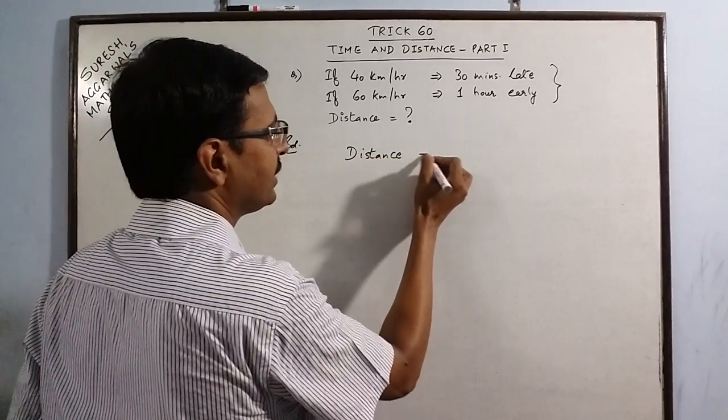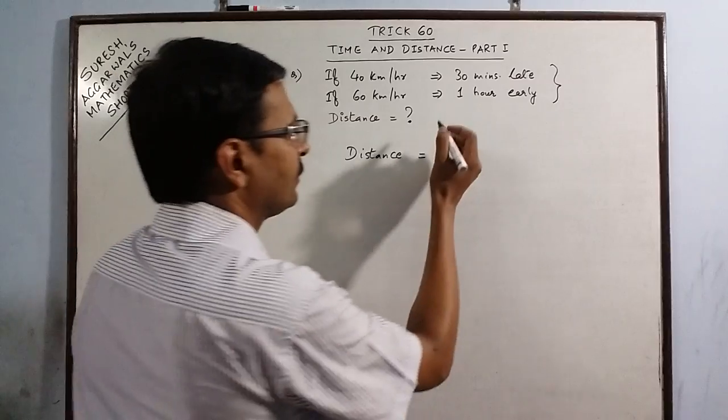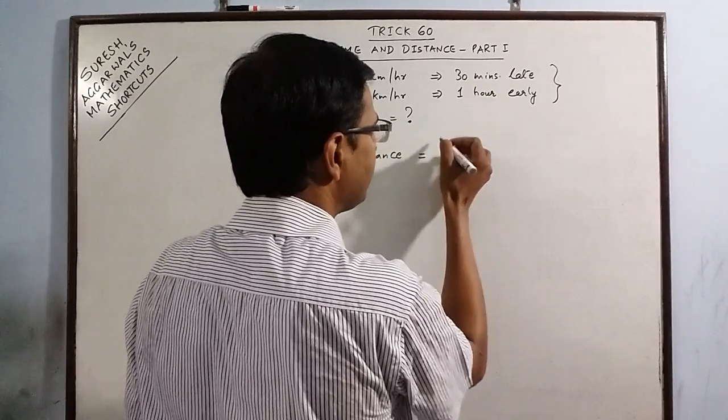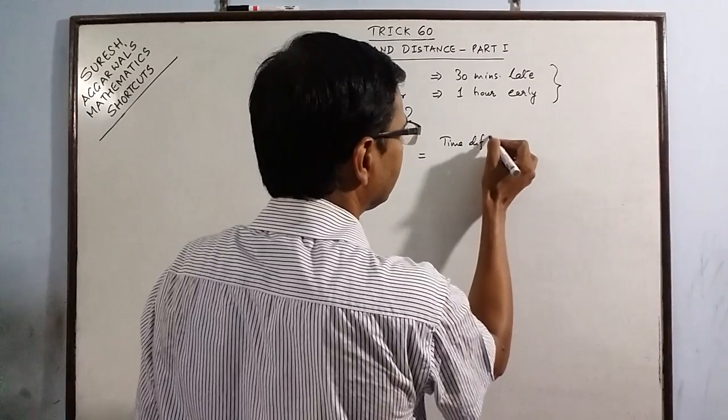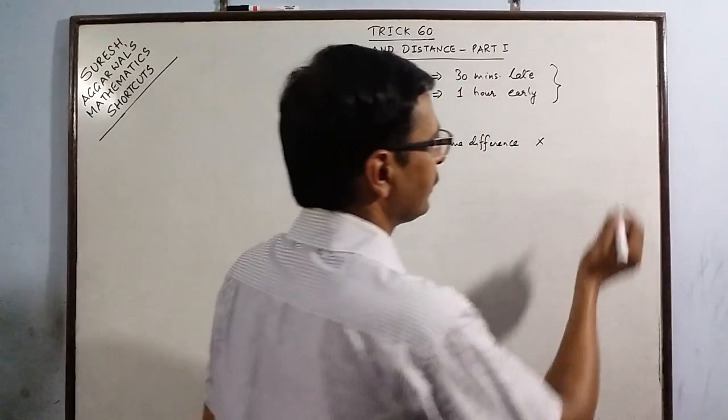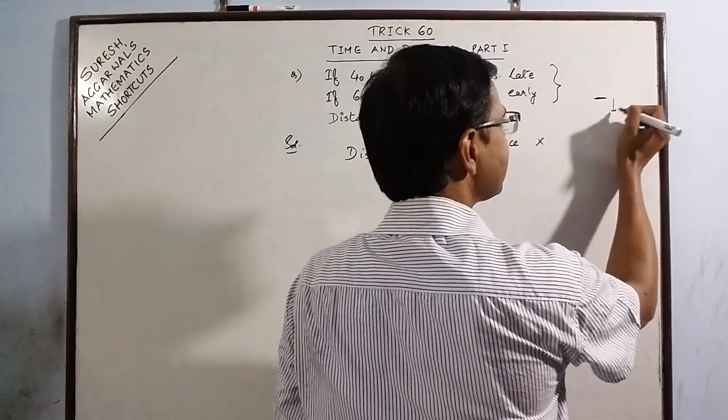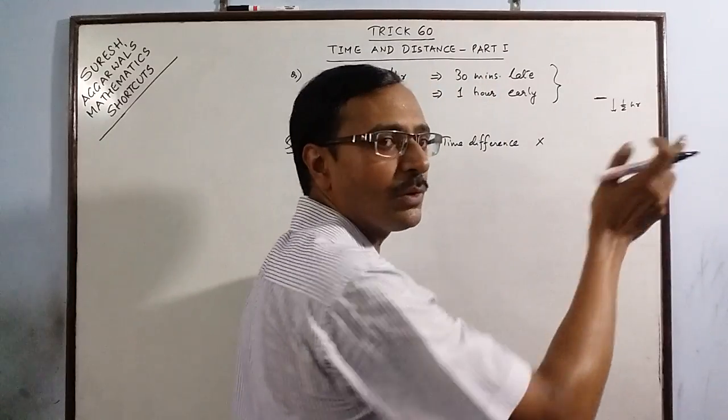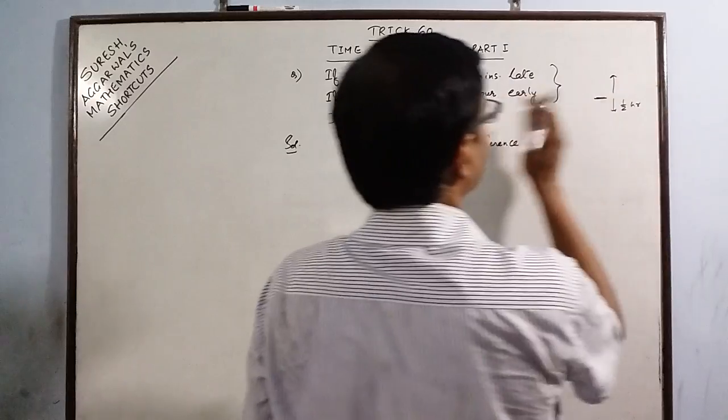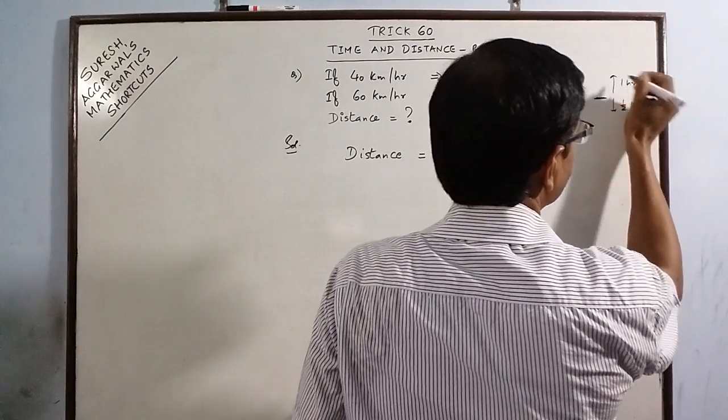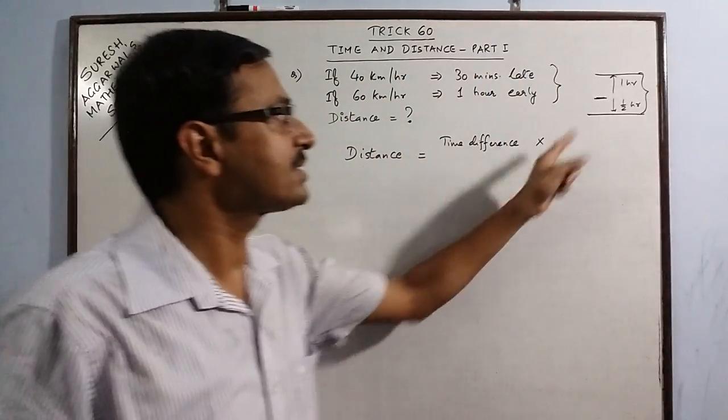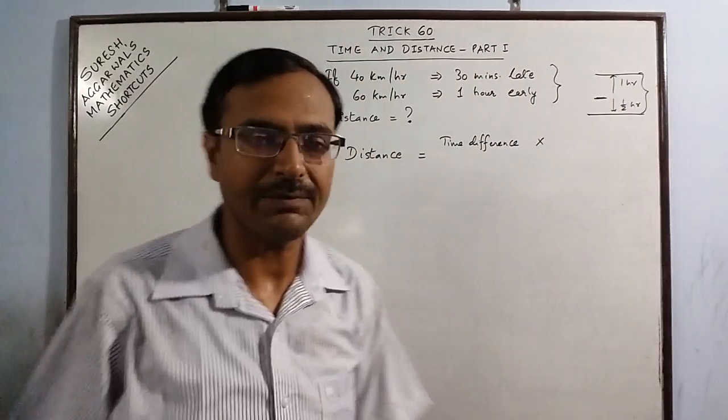You have to calculate the distance. For this, just have the difference between these two times, time difference. See here, 30 minutes late, so we have the original time as this: 30 minutes late, half hour late. 30 minutes is half hour, you have to convert it into hours. Half hour late and 1 hour early. So the distance between these two times is 1 and half hours. Time difference is 1 and half hours.